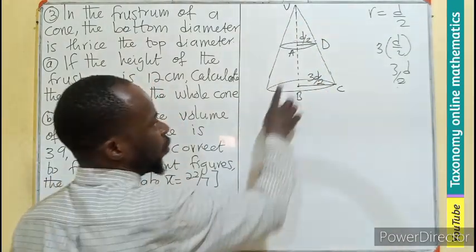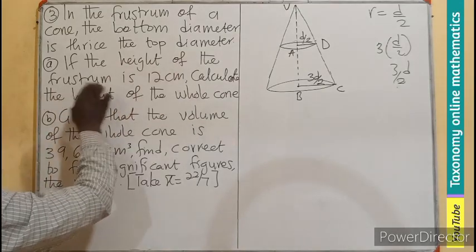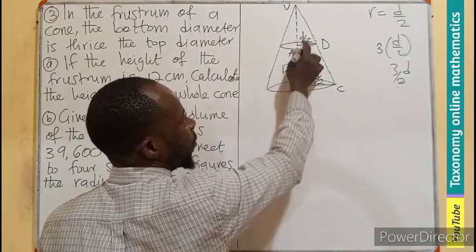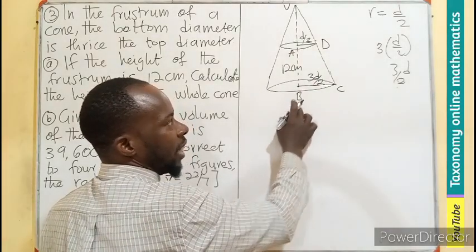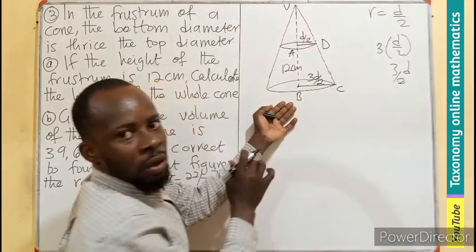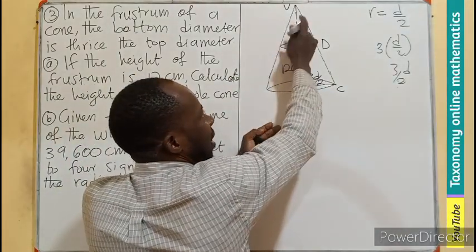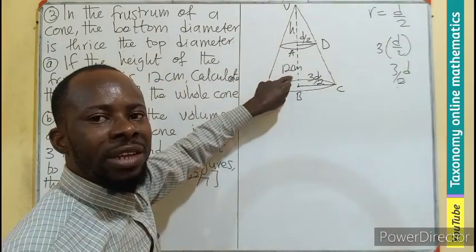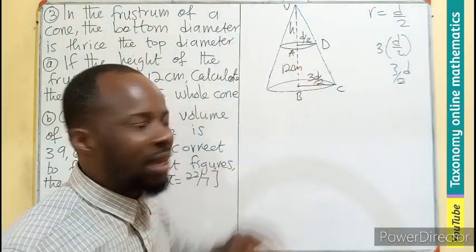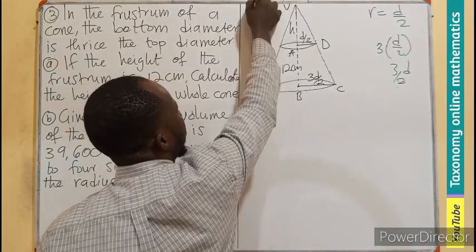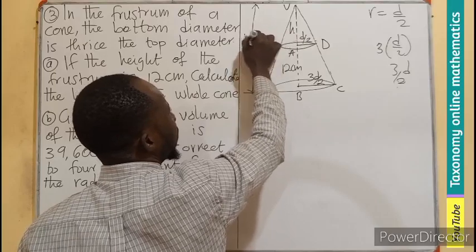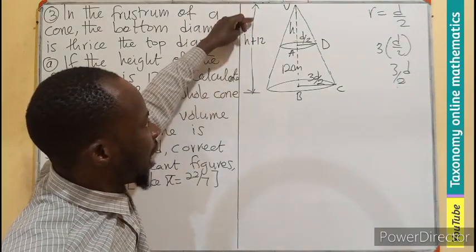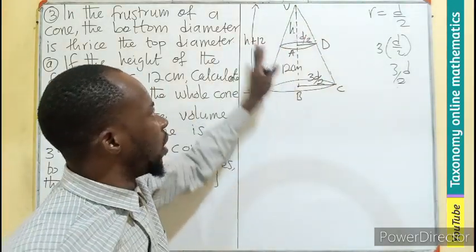We know that if the height of the frustum is 12, AB is given as 12 cm. If I know whatever is here, label it H as the height of the smaller cone. The height of the smaller cone plus 12 gives us the height of the main cone. From here, if I move all the way to this place, it is H plus 12.